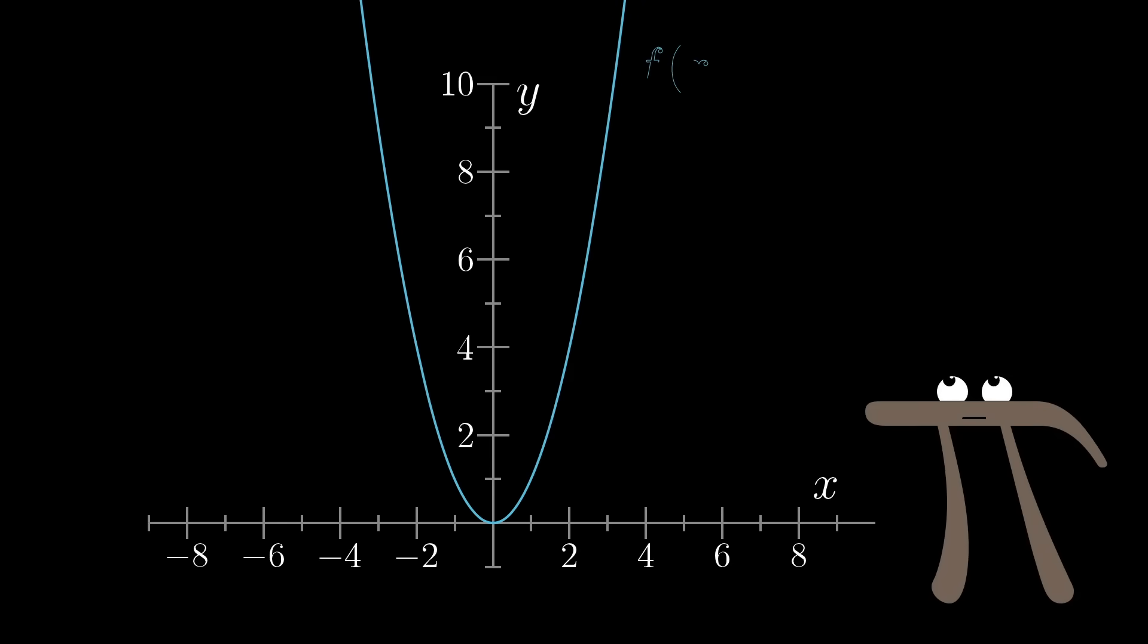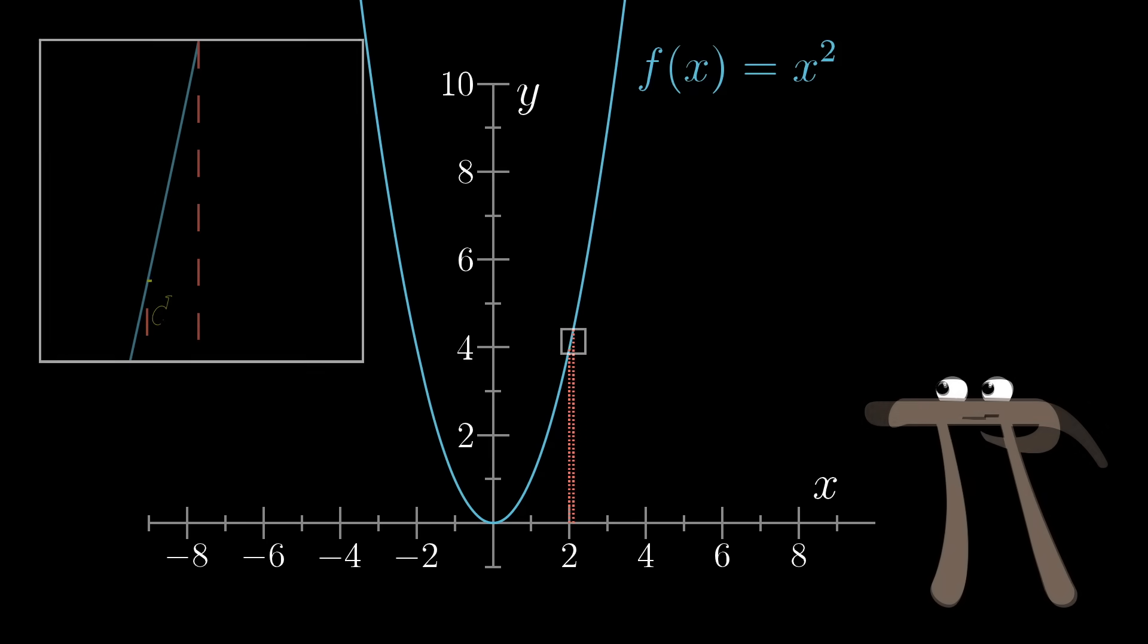Let's start with a simple function, like f of x equals x squared. What if I asked you its derivative? That is, if you were to look at some value x, like x equals 2, and compare it to a value slightly bigger, just dx bigger, what's the corresponding change in the value of the function, df? And in particular, what's df divided by dx, the rate at which this function is changing per unit change in x?